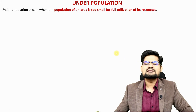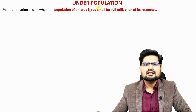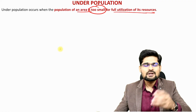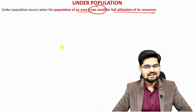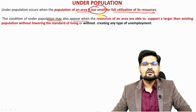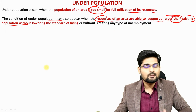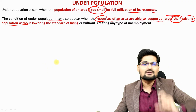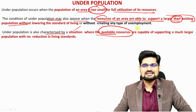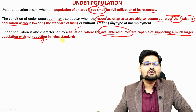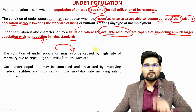Now for underpopulation — the opposite of overpopulation. Underpopulation occurs when the population of an area is too small for the full utilization of its resources, meaning the population is so few or so unproductive that it cannot utilize the natural resources available. The condition may also appear when an area's resources are capable of supporting a larger population than the existing one, indicating underutilization. Underpopulation is characterized by available resources capable of supporting a much larger population with no reduction in living standards.